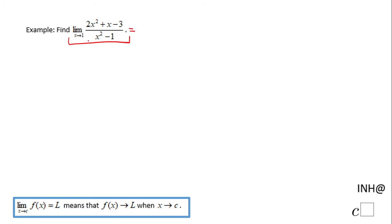The first thing I do when I have to evaluate the limit is to plug this number in. We have 2 times 1² + 1 - 3 in the numerator and 1² - 1 in the denominator. You notice we get here what?